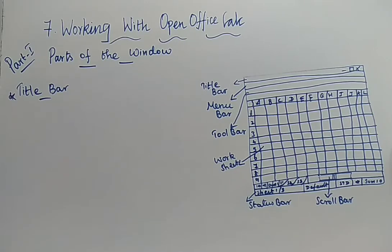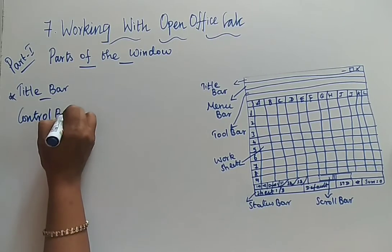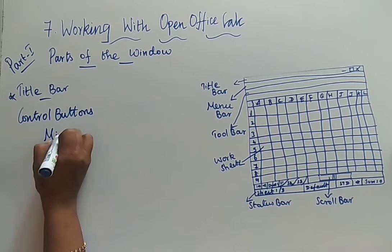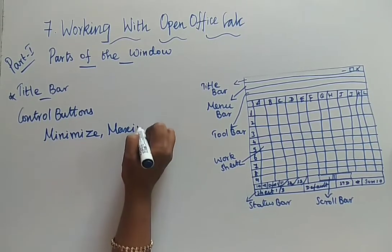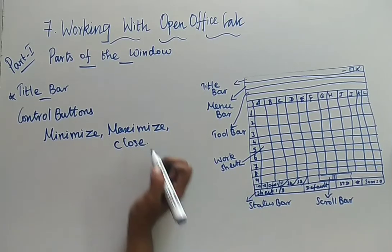Then you will have the name of the application — that is OpenOffice Calc. Clear with the title bar. In the title bar, to the right end, you will have control buttons. What are the control buttons? The control buttons are nothing but Minimize, next is Maximize, and next is your Close button. These are the three control buttons seen in the right corner.